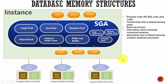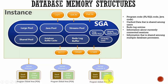The other memory structure is the Program Global Area. This Program Global Area is a non-shared memory, meaning it does not share the data stored in this area with any other processes. Each server process and background process will be allocated a Program Global Area, and the data stored within that Program Global Area is only visible to that specific server process.